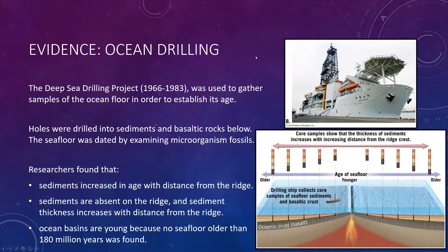The distribution and thickness of ocean floor sediments provided additional verification of seafloor spreading. Drill cores revealed that sediments are almost entirely absent on the ridge crest in the middle, and that sediment thickness increased with increasing distance from the ridge. This pattern makes sense: the material at the center is brand new, so not much sediment has accumulated on top of it, but the further away you go and the older the crust gets, the more time has passed for sediment to build up.